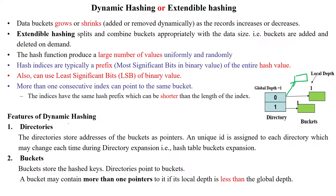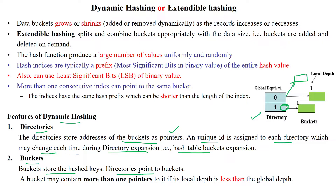The features of dynamic hashing are: there are directories. The directory is represented here in the form of a hash table, which is storing the addresses of buckets as pointers. So here this is pointing to bucket number two, so the pointer is stored in the directory. A unique ID will be assigned to each directory, which may change each time when the directory is expanding or shrinking with hash table bucket expansion. Directories are pointing towards the buckets.